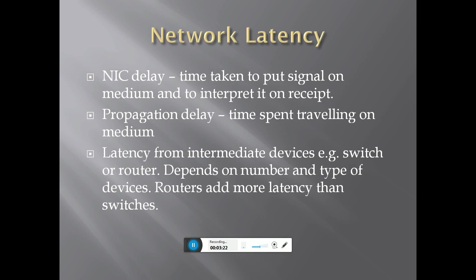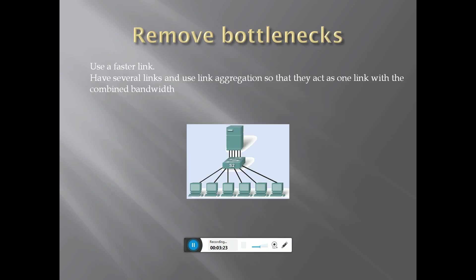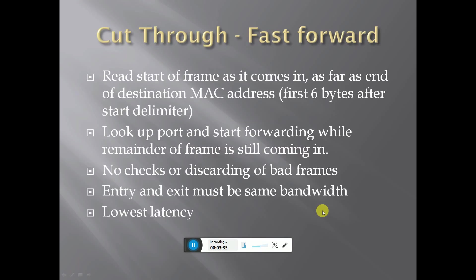This shows the use of fast link and several links. Using a link creates a connection between the switch, router, and server. The cut-through fast-forward method reads the start of frames.